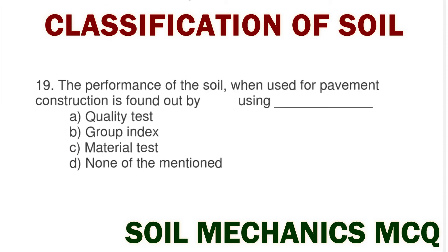Next question: the performance of soil when used for pavement construction is found out by using option A quality test, option B group index, option C material test, option D none of mentioned. The correct answer is option B group index.